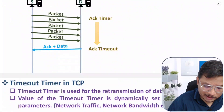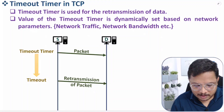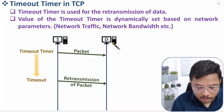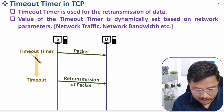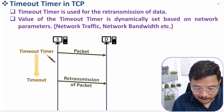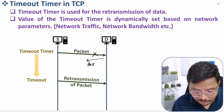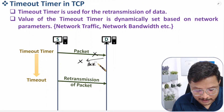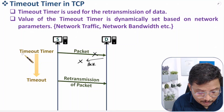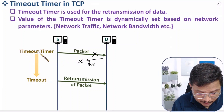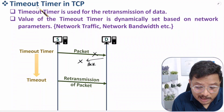The timeout timer is used for retransmission in TCP. When a sender forwards a packet, it initiates a timeout timer for that packet. If the packet is lost in the medium, or if the acknowledgement is lost, the sender will never know whether the packet was received. After the timeout timer expires, the sender performs retransmission of the packet.